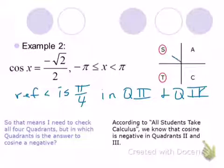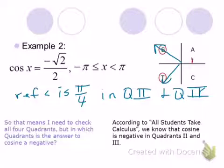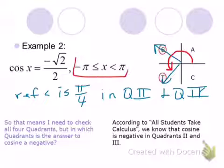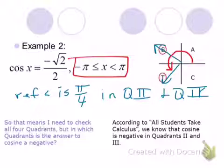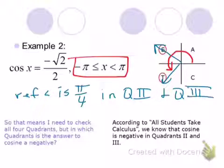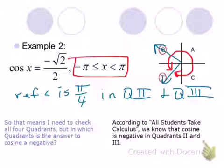My angle is going to be here and here — pi over 4 as the reference angle. Here's what's crucial in this problem: I cannot start here and go all the way around there to get to that angle, because that would take me to 5 pi over 4, which is not in this interval — it's more than pi. To get to that quadrant 3 angle, I have to go in a negative direction.